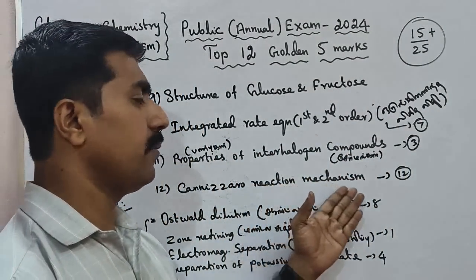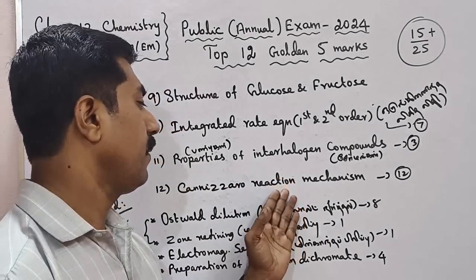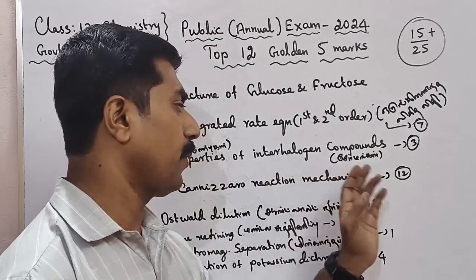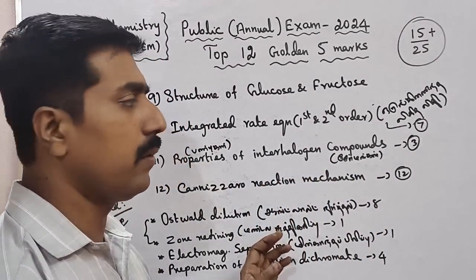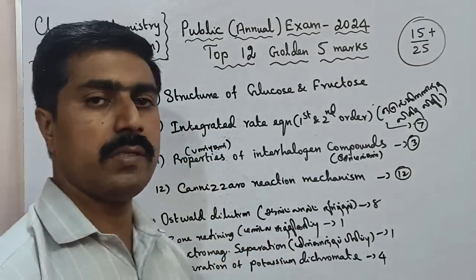Question 12: Cannizzaro Reaction Mechanism. Aldol is Unit 11, and Cannizzaro is Unit 12. That completes the Top 12 questions.